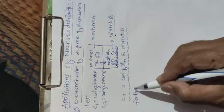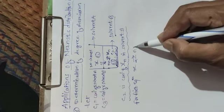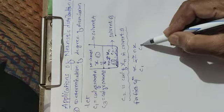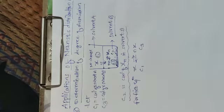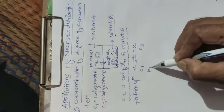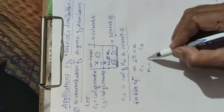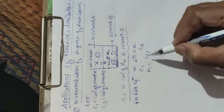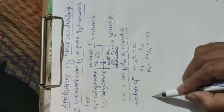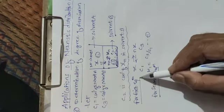For the first equilibrium, X in solvent A is in equilibrium with X in solvent B. The concentration in solvent A is c1 and in solvent B is c3. According to Nernst distribution law, the distribution coefficient k1 equals c3 divided by c1. This is equation 1.